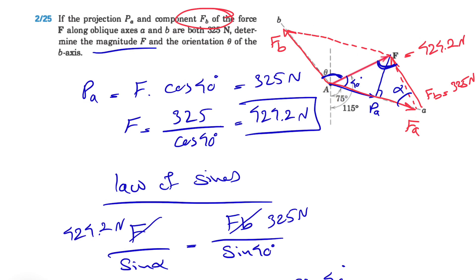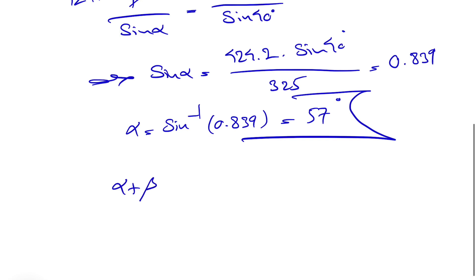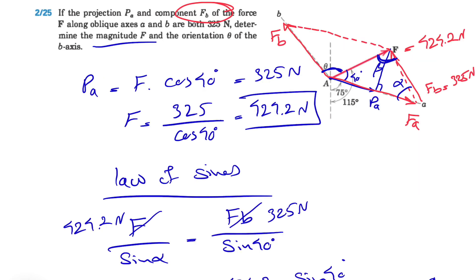Let's call this angle beta. We know α + β + 40 = 180 because they're the sum of angles in a triangle. We found α = 57, so β = 180 - 97 = 83 degrees.